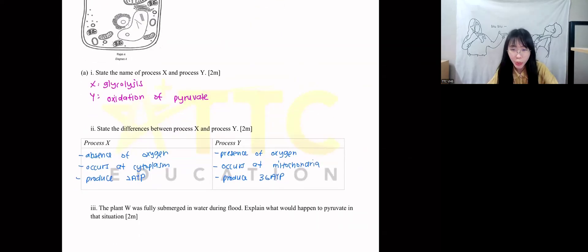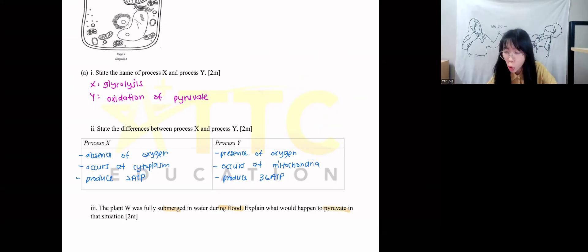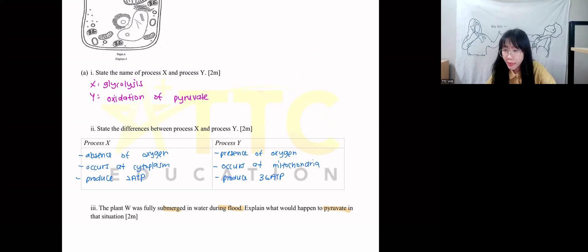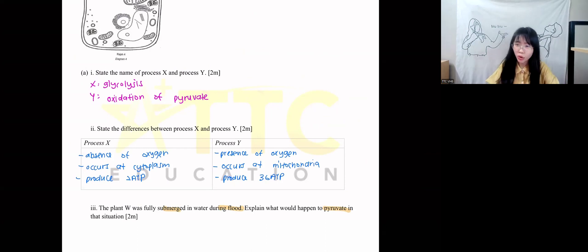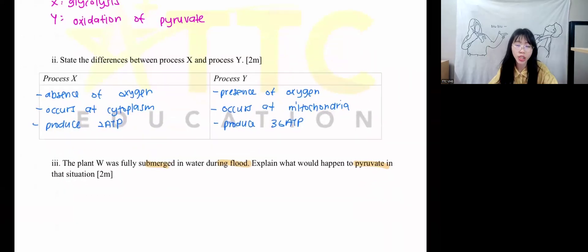Plant W was fully submerged in water during a flood. Explain what would happen to the pyruvate. Oxidation of pyruvate requires oxygen, but because they are submerged in water, they cannot carry out oxidation anymore. The process that will take place is called alcohol fermentation, because there is no oxygen.